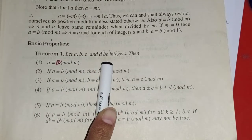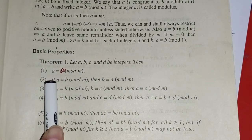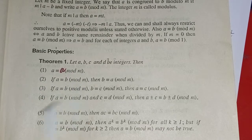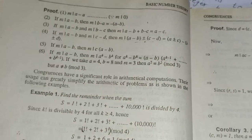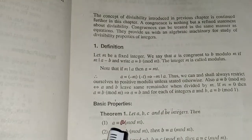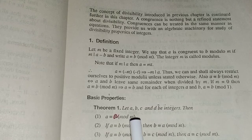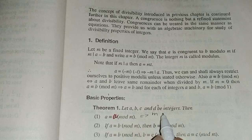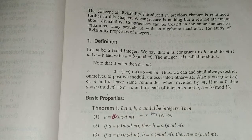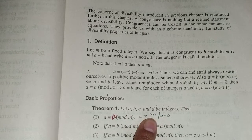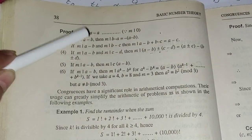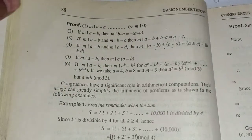Given integers a, b, c, d: Property 1 — a is congruent to a modulo m (reflexive property). How can we show this? M divides a minus a, which equals M divides 0. Since M divides 0 is always true, a ≡ a (mod m) is proved.